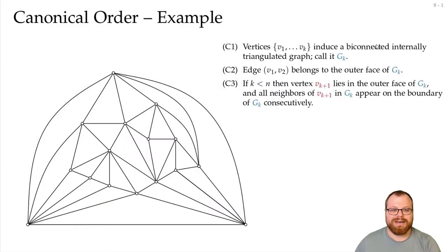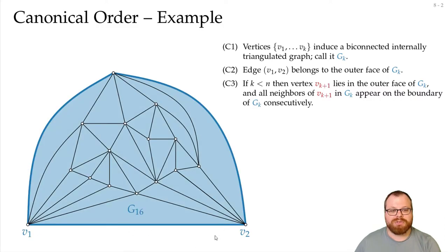Let's have a look at an example. We have a triangulated plane graph here, and we have our conditions here. We already chose our outer face, so let's say that this edge here is the edge v1, v2, then this is our graph in the very end, this is the graph G16.